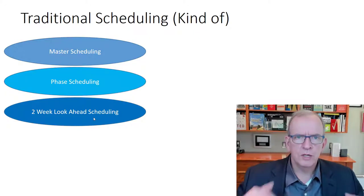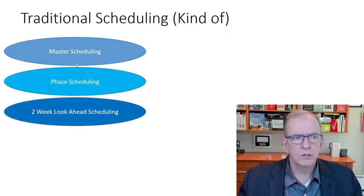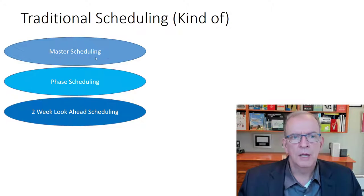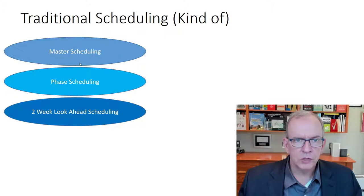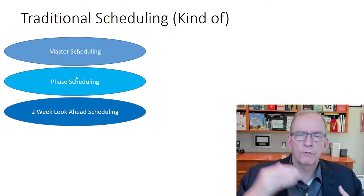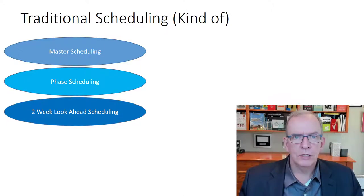What you're doing is really detailing that out and getting commitments from the trades involved in the work. The baseline schedule may have been developed without full involvement of the trades, or may have involved some major trades — perhaps your mechanical systems trade, your curtain wall supplier. But other than that, probably not much more in the development of the original baseline schedule. In phase scheduling, more trades should be involved because if you're not getting their commitments, it's very unlikely that you'll actually hit your targets.